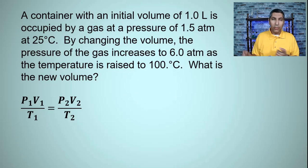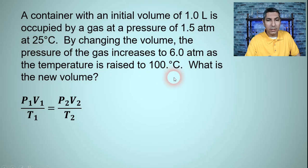So we can see that pressure, volume, and temperature are all changing in this equation. We go from 1 liter of volume to some new volume. We go from 1.5 atmospheres to 6 atmospheres. Our temperature changes from 25 degrees to 100 degrees. So all three of those are changing. So that's why we have to use the combined gas law. We're just going to plug and chug right into that equation.